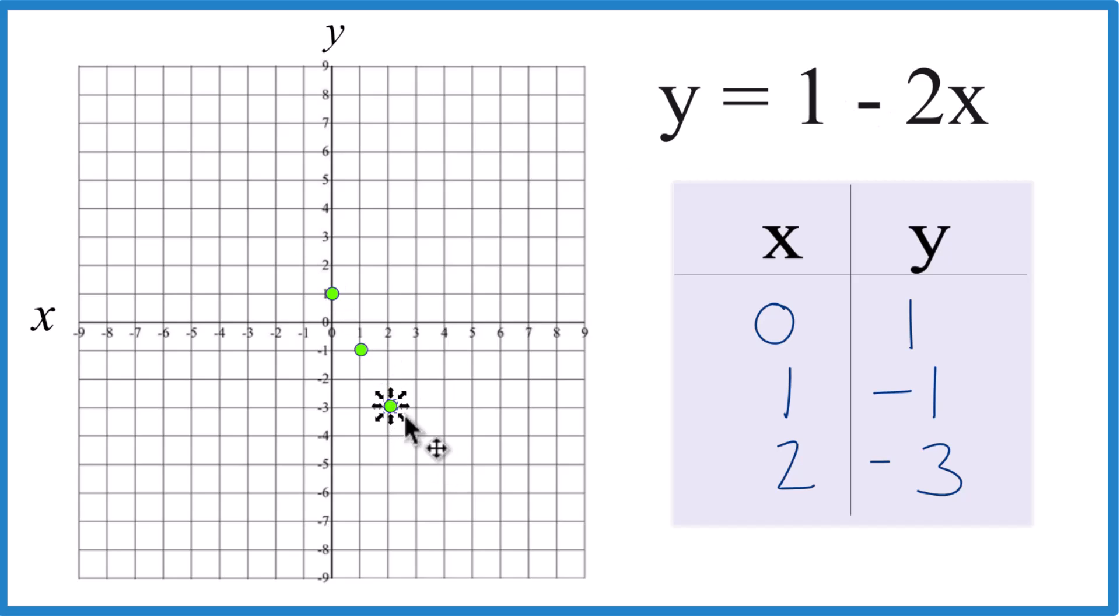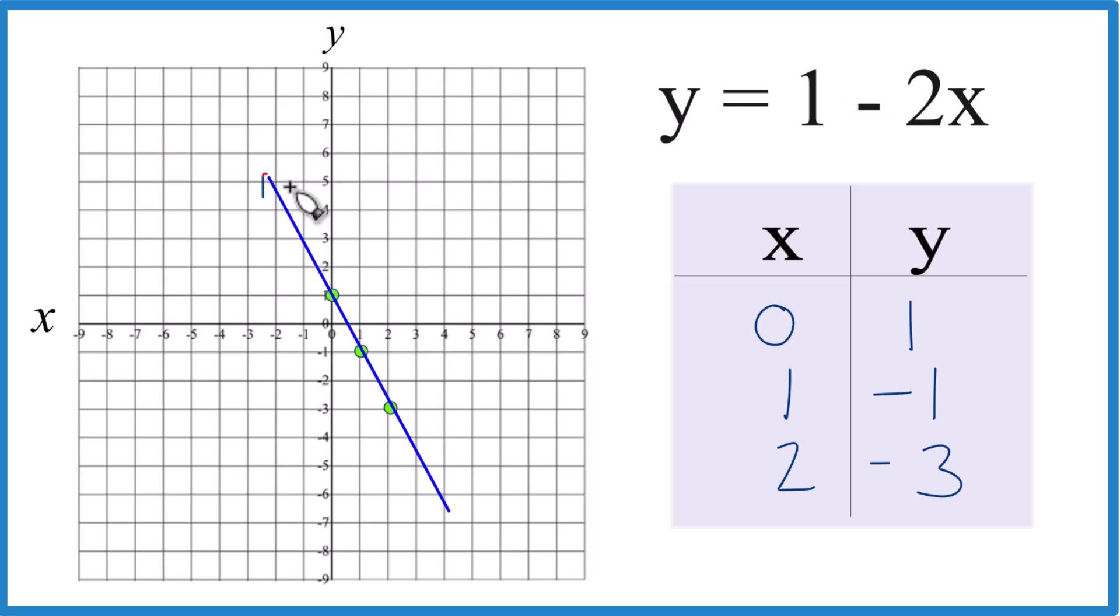And you can see all of these line up here. Let's put a line through that. And we'll put arrows to show it goes to infinity. And that's the graph for y equals 1 minus 2x. You could put other values in for x, you get a value for y, that point will be on our line.